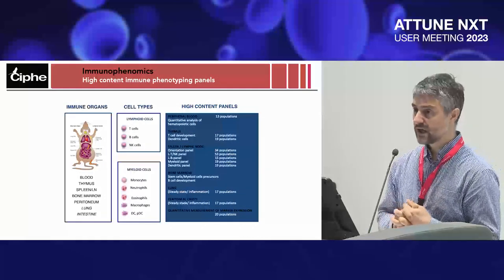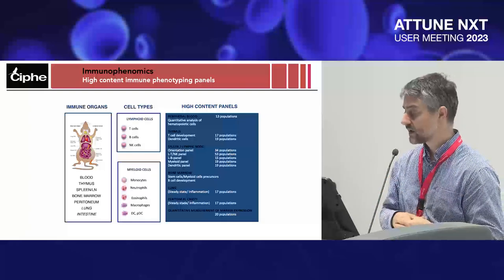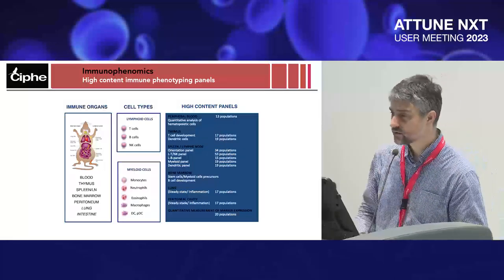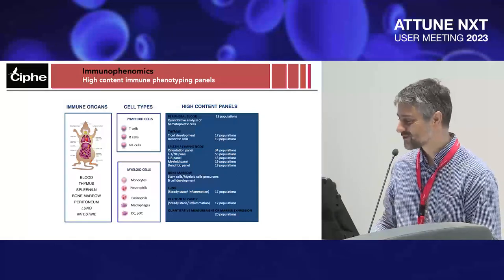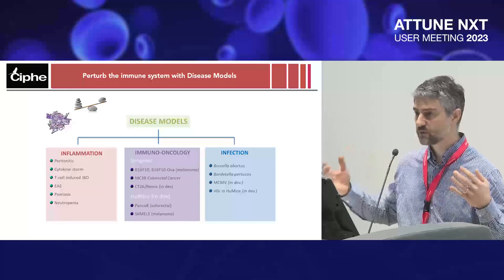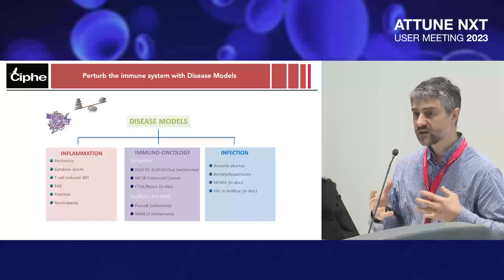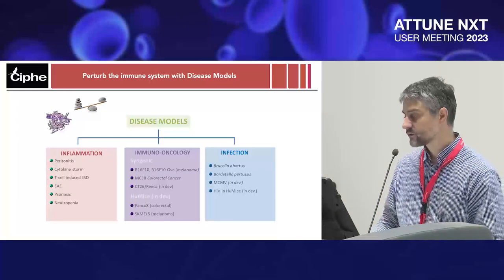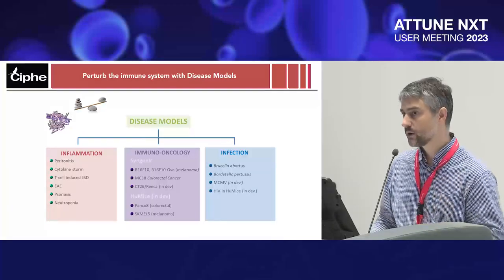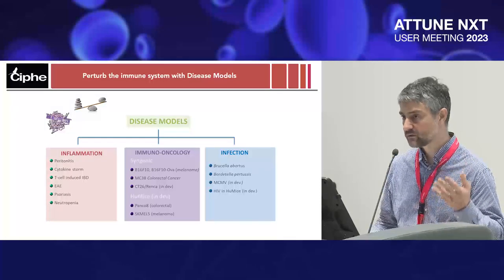We have lots of panels and can profile the whole mouse immune system in different organs. This process took some time — it's been about 10 years with the Attune now. Once you have these panels, what you want to do is perturb the immune system, change the basal status, and see how the immune response reacts to the challenge. We do inflammation, but currently we do more and more immuno-oncology pipeline with translational approaches like patient-derived xenograft.